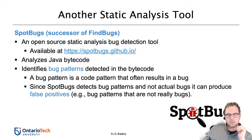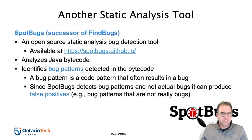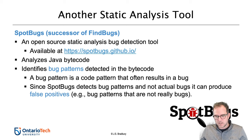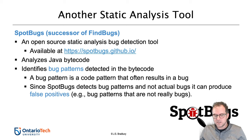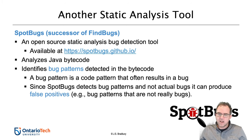Another static analysis tool is SpotBugs, built on top of the formerly popular FindBugs — it's the open source successor. You can find it at spotbugs.github.io. This tool analyzes Java bytecode and looks for patterns: it scans the bytecode to see if there are patterns that match known bug patterns. SpotBugs has a whole list of possible bug patterns and the types of bugs they can lead to, then goes through the code to see if there are any instances of those patterns. If there are, it lets you know that code using this pattern often has this problem.